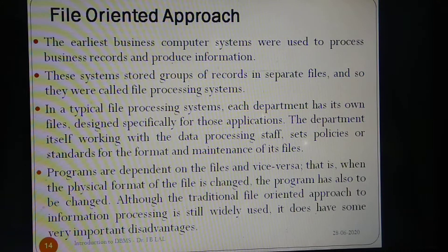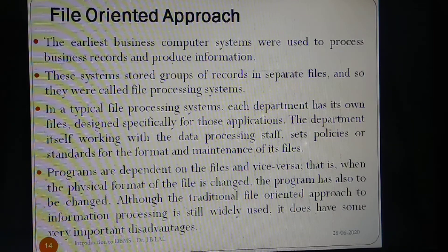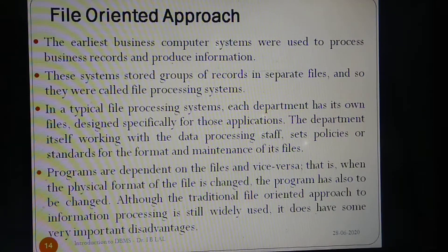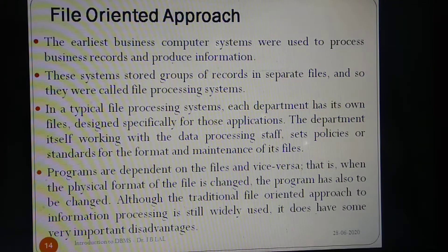When we need to look something up, we go to the filing system and search through the system starting from the first entry until we find what we need. Alternatively, we may have an indexing system. If the filing system becomes very large and voluminous, we can have an indexing system where the whereabouts of the file are written, so the searching becomes faster. We may have an indexing system that helps us locate what we want more quickly. For example, we may have divisions in the filing system or separate folders for different types of items that are in some way logically related.